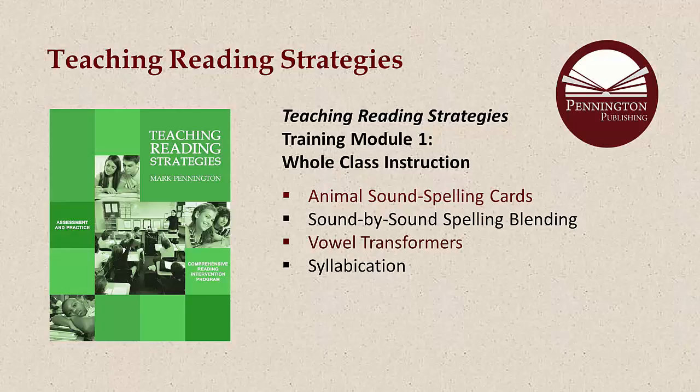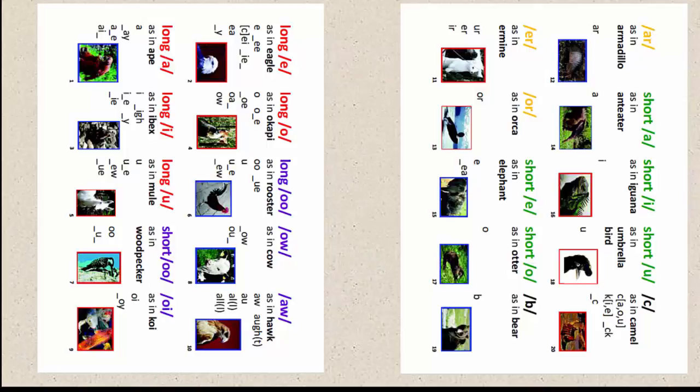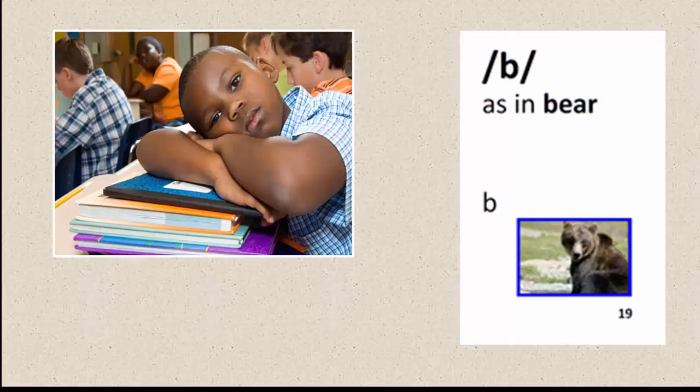The first whole-class instructional component consists of the 43 animal sound-spelling cards. Students must master the names and speech sounds — that is, the phonemes — on all 43 animal sound-spelling cards within the first two weeks of instruction. Students also practice, but won't yet master, the spellings of each of the sounds. Each of the cards has a picture, sound, and spellings of the phoneme.